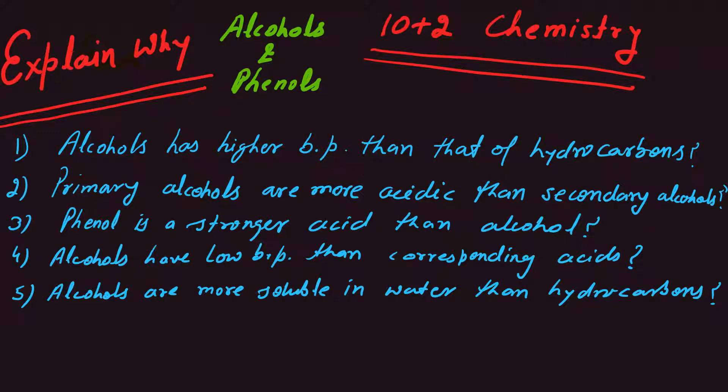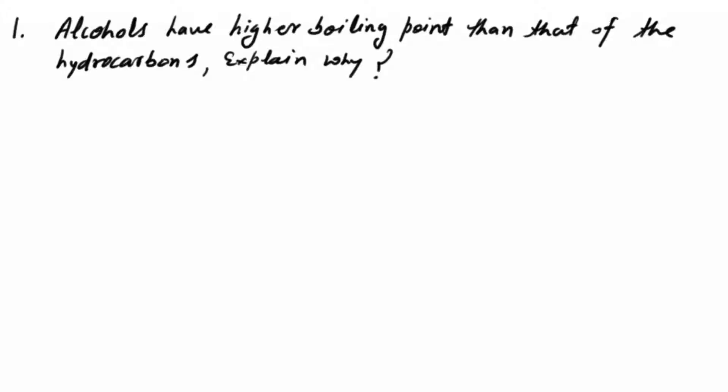Let us discuss some reasoning questions from alcohols and phenols. The topics are: alcohols have higher boiling point than hydrocarbons; primary alcohols are more acidic than secondary alcohols; phenol is a stronger acid than alcohol; alcohols have lower boiling point than corresponding acids; and alcohols are more soluble in water than hydrocarbons. Let us discuss these questions one by one. The first one is: alcohols have higher boiling point than that of hydrocarbons — explain why.